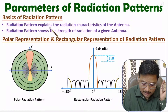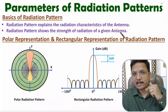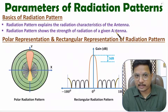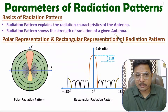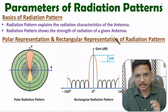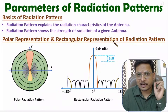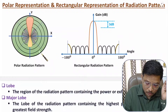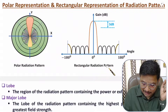Radiation pattern explains the radiation characteristics of an antenna. With the use of an antenna we transmit EM waves in space, so we need to understand what are the radiation characteristics. Radiation pattern shows the strength of radiation of a given antenna. Here I will be considering the radiation pattern of a directional antenna, shown in both polar representation and rectangular representation.